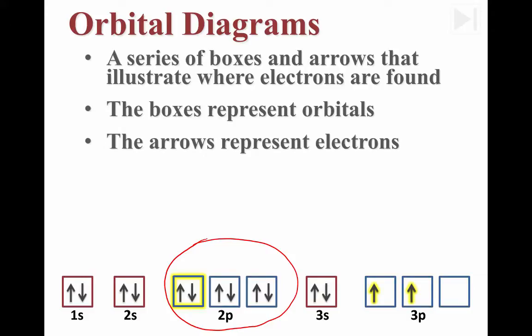Anywhere you see an arrow in this diagram, that represents the electron. Remember, if you're going to put two electrons into the same orbital, they must have opposite spin. So we draw one of the arrows pointing up and the other arrow pointing down.